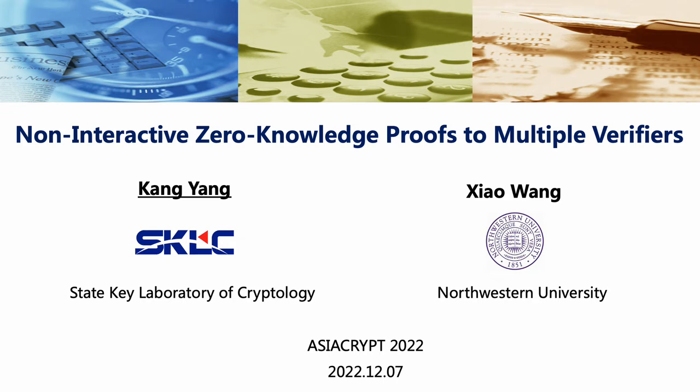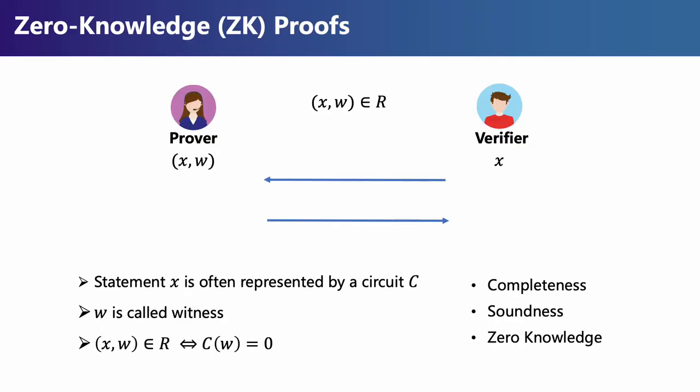Our work is entitled Non-Interactive Zero-Knowledge Proofs to Multiple Verifiers. Zero-knowledge proofs enable a prover to convince a verifier that a statement is true. The statement X is often represented by a circuit, and W is called the witness. In this case, (X, W) certifying an NP relationship is equivalent to C(W) equal to zero.